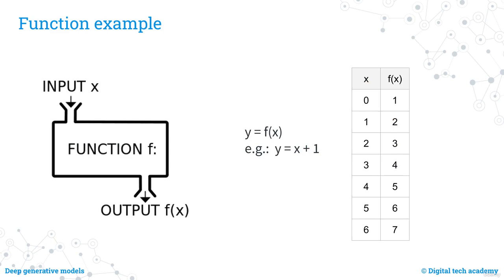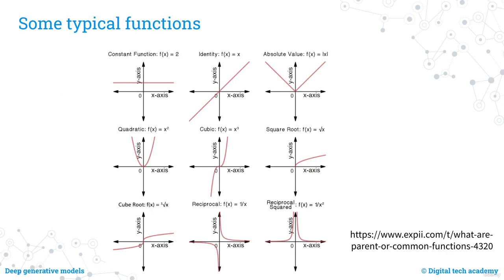For example, the function y = x + 1: if the input is 0, the output is 1; if the input is 1, the output is 2, and so on. Common mathematical functions can be plotted on a graph with input on the x-axis and output on the y-axis. The reason we discuss functions is that algorithms like object detection can be represented mathematically — the input is an image represented by matrices for red, green, and blue channels, and the function produces labels and bounding box coordinates.